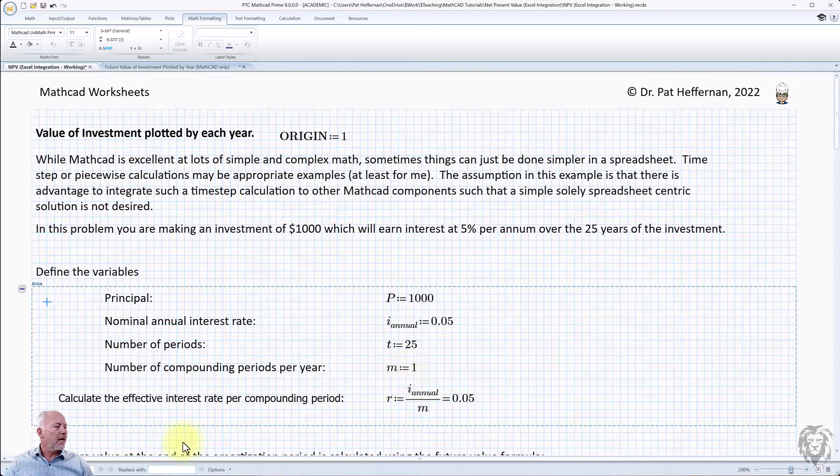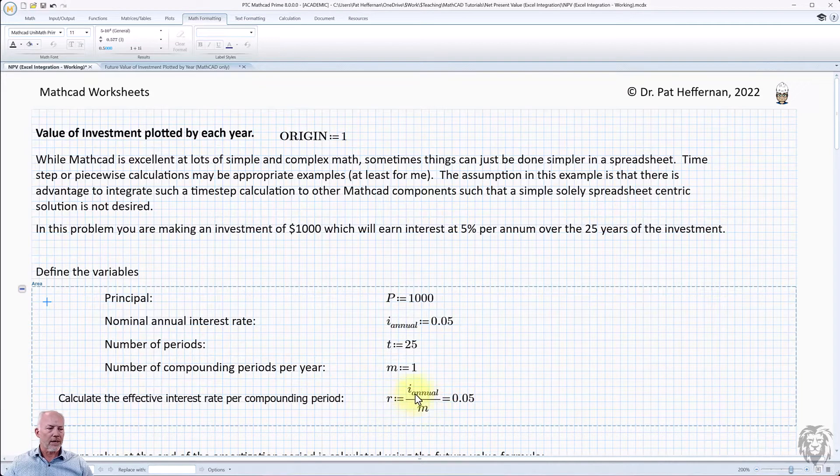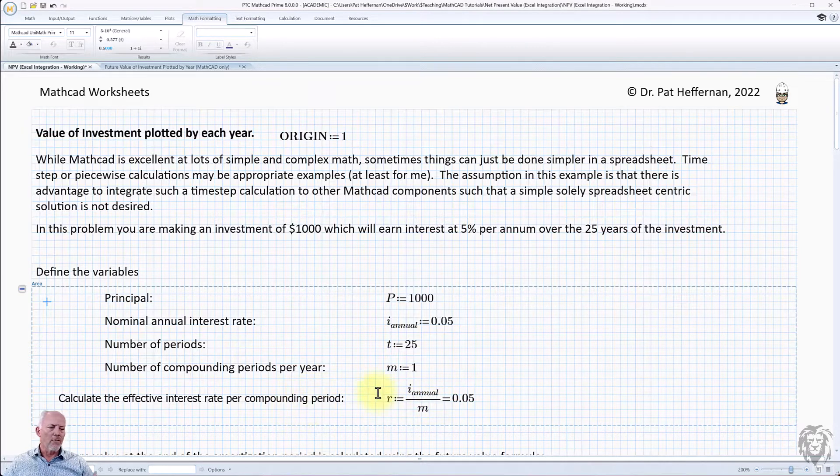And then we can calculate the effective interest rate, annual interest rate, by per period of R equals I annual over M, which won't really play in this because we have M equals one.